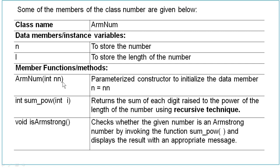We have member methods like ArmNum — a parameterized constructor with parameter NN — to initialize the data member N equal to NN. Then there is a function int sumPower(int i) which returns the sum of each digit raised to the power of the length of the number using recursive technique. And the next function void isArmstrong checks whether the given number is an Armstrong number by invoking the function sumPower.